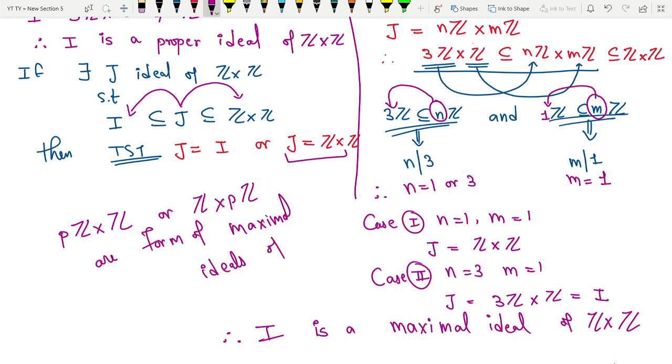So if anything like this looks, you can prove it is a maximal ideal. Otherwise, it is not going to be a maximal ideal because you can always find out an ideal which is bigger than it and a proper of the Z×Z.